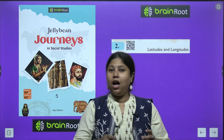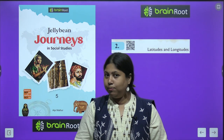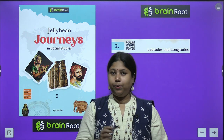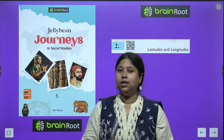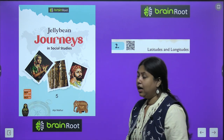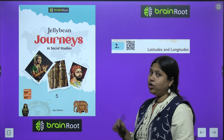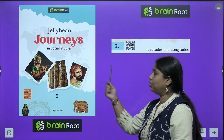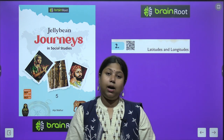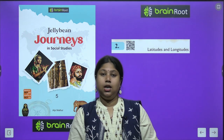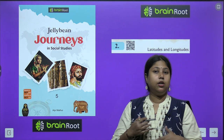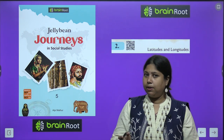Hi, my dear lovely children, how are you all? I hope you all are doing good. Are you ready to begin with a new lesson of your book? Welcome back to your SST class. I am your teacher Ananya, and I am back with a new chapter of your series — Jelly Bean Journeys in Social Studies for class 5 by Brainroot Publication. In chapter 1 we learned about globe, maps, directions and all about it.